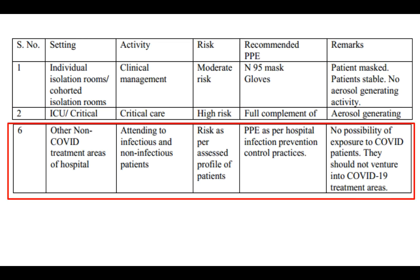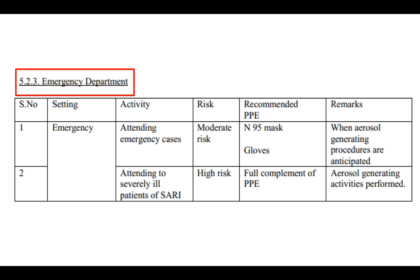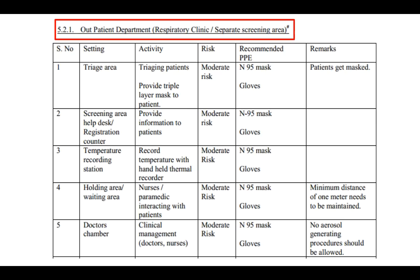For other non-COVID treatment areas, PPE can be used based on hospital infection control practices. For the ED, at least an N95 mask and gloves are recommended, and if it's a severely ill patient with respiratory illness, a full complement of PPE. For OPDs — including triage areas, screening areas, temperature recording stations, holding areas, and doctors' chambers — an N95 mask and gloves should be worn, though this may be an overreach given the current shortage of N95 masks.